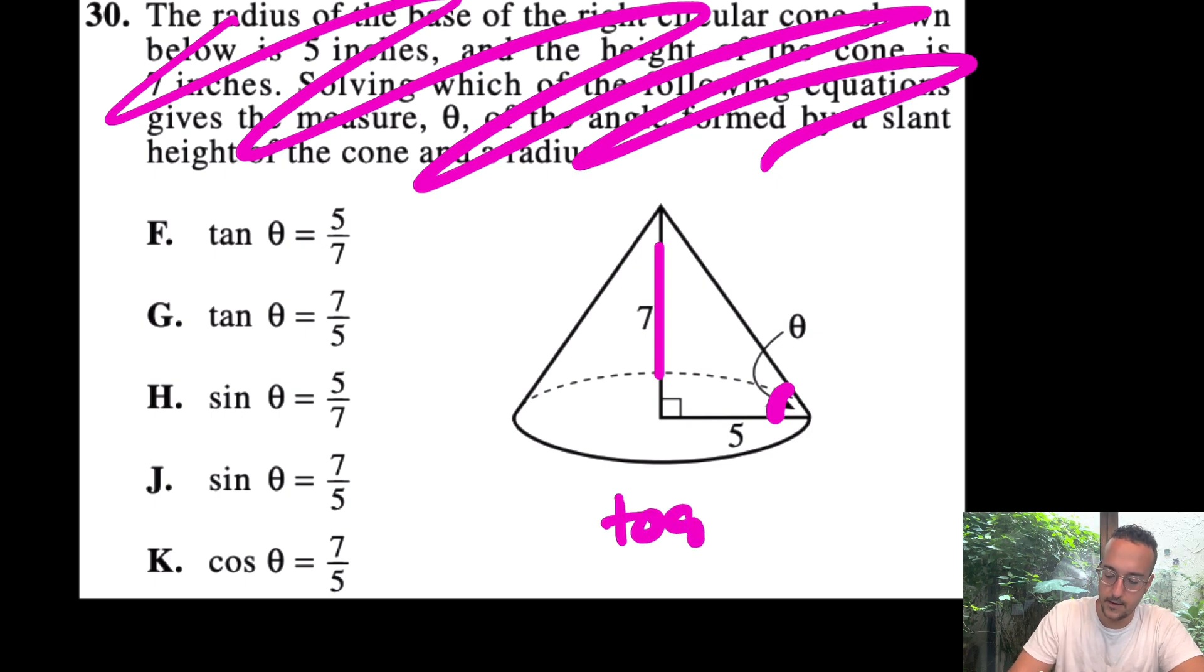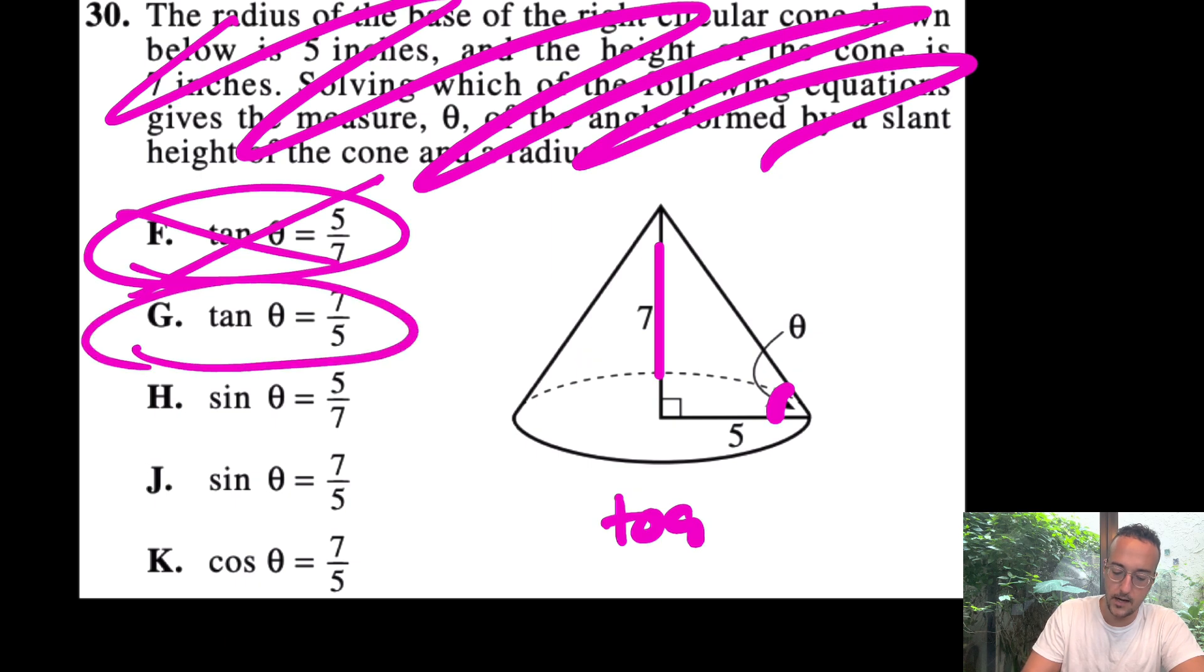For me, that's making me think of TOA. And really, the answer has to be, oopsies, not F, but actually G. And why G? Because this would be opposite. Seven is opposite over adjacent. Again, opposite over adjacent. So we like G.